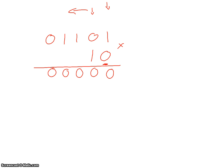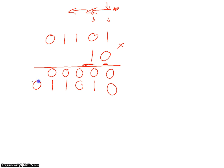Now we move across to the one and multiply everything on the top row by this bottom number one, working right to left. But first we put a zero down — always put a zero down. Starting from this one: one times one is one, one times zero is zero, one times one is one, one times one is one, and one times zero is zero.